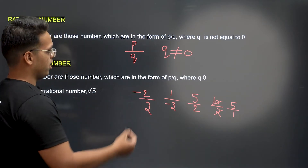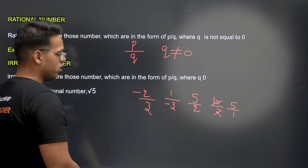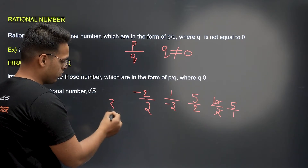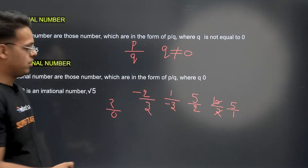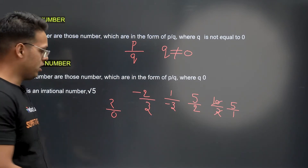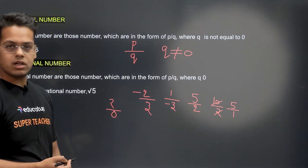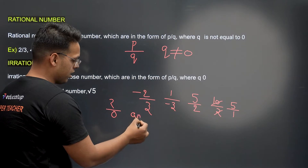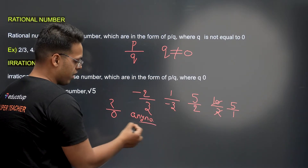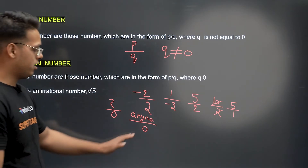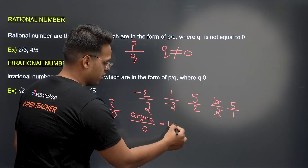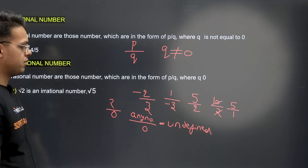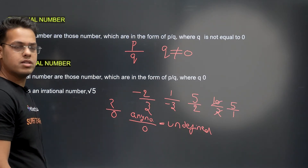You have to note that the value of Q is always not equal to zero. If you see something like 2 upon 0, that is undefined. Any number divided by 0 is undefined, so that is not a rational number.